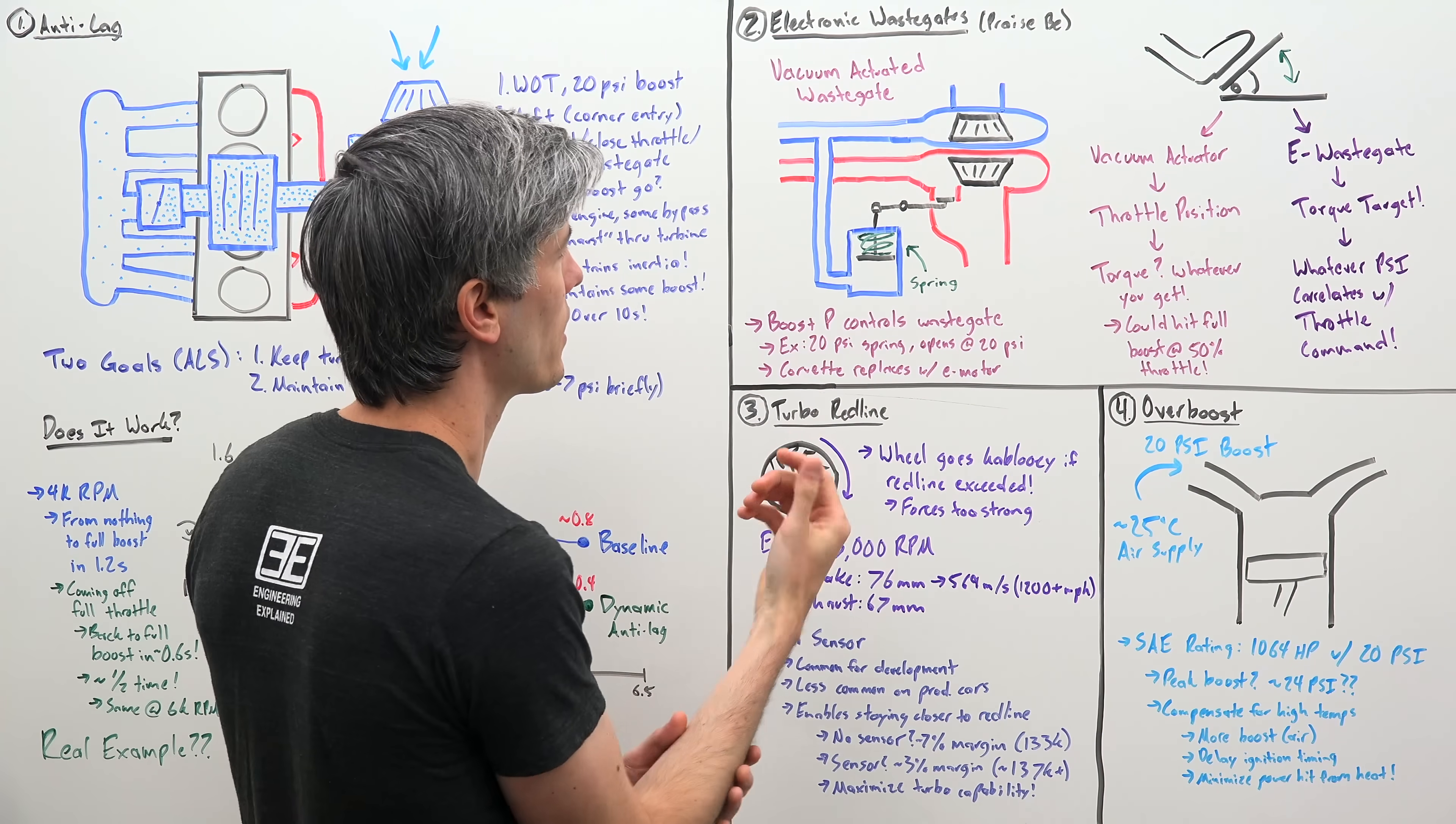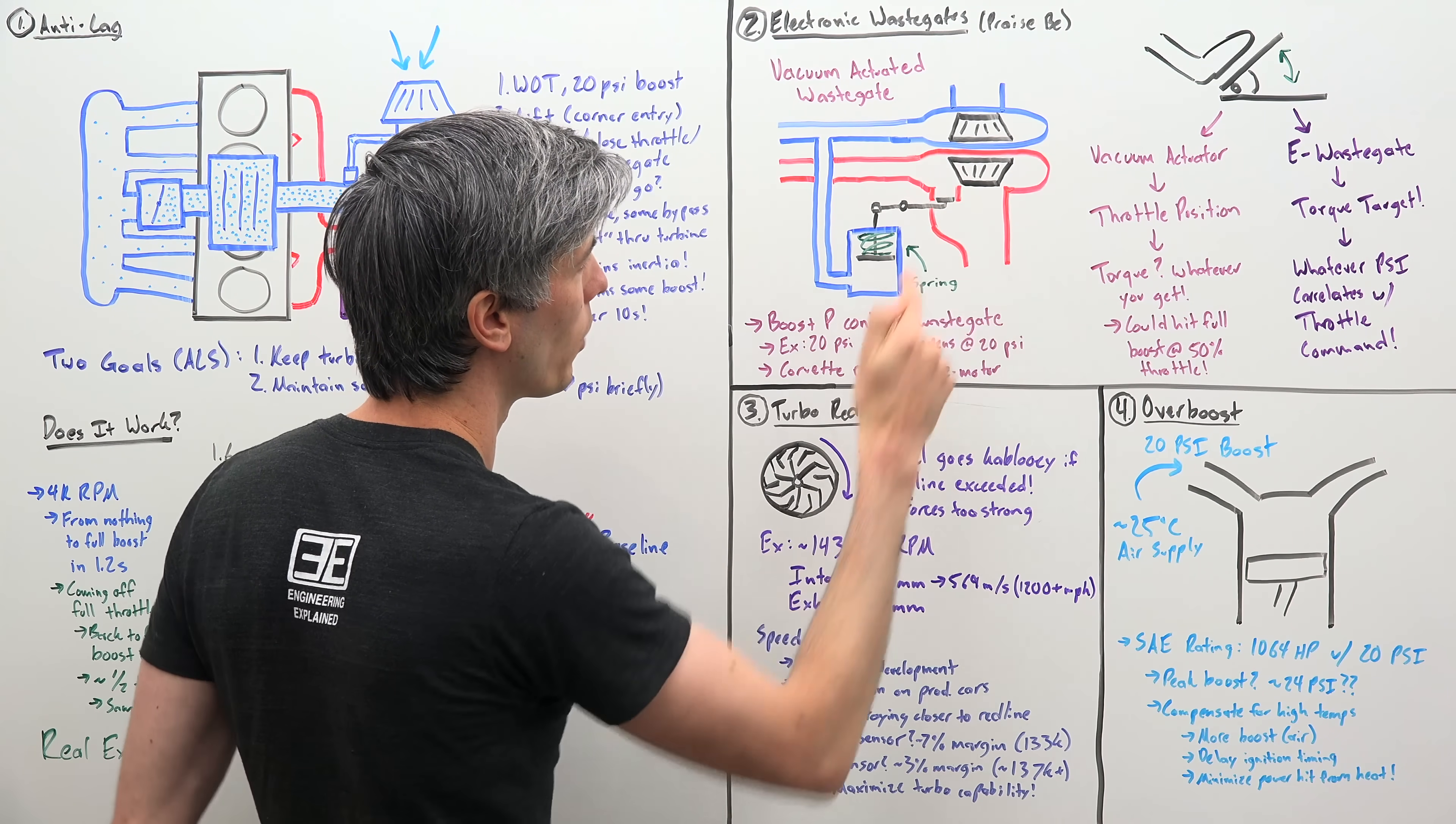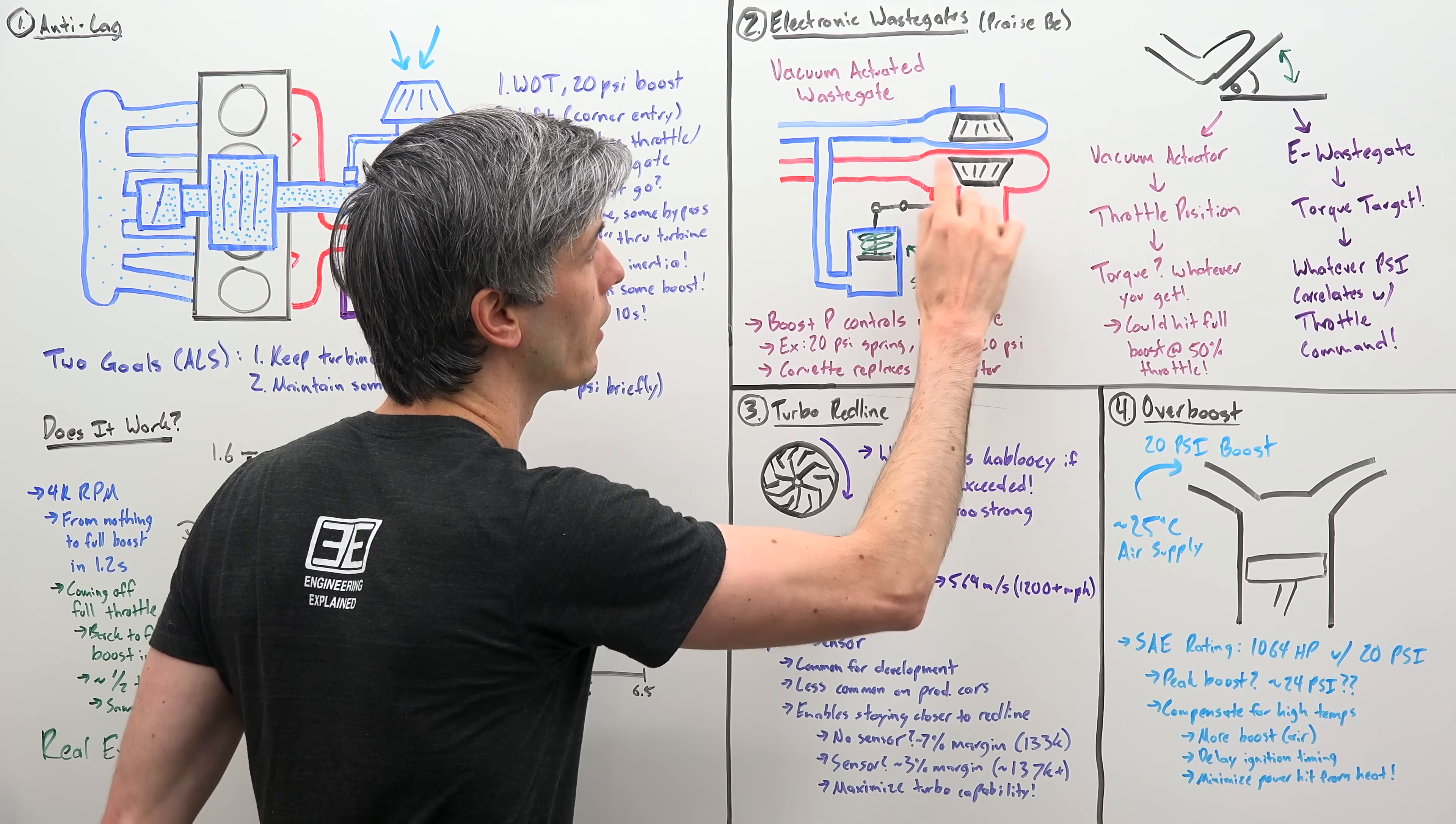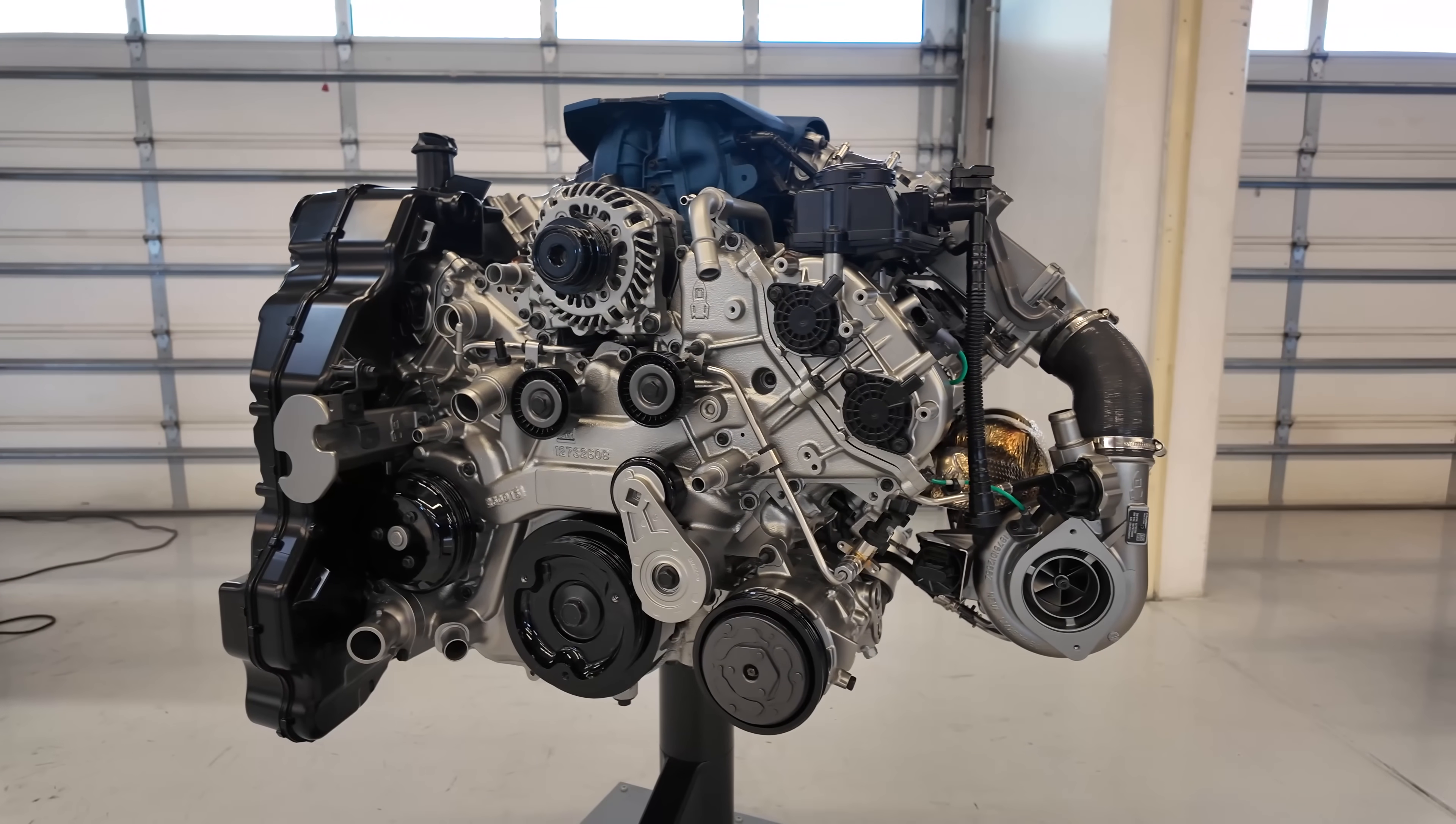So let's say you have a 20 psi spring. Well then, once your boost pressure is at 20 psi, it forces that spring in, opening up this wastegate and allowing your exhaust to bypass the turbocharger. So some of it's still going to be routing through the turbine wheel keeping it spun up. Some will bypass it, and you'll sit at a perfect 20 psi within your engine.